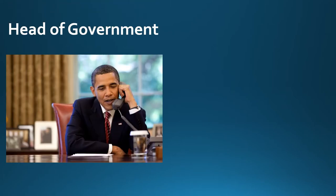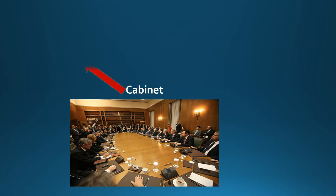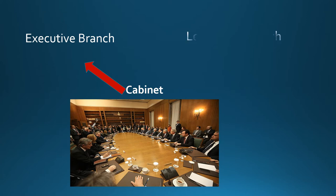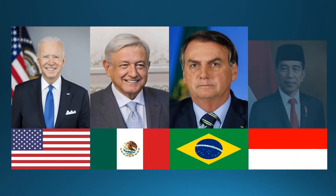Under a presidential system, the president serves as the country's head of government and its head of state. As head of government, the president leads the country's government and is responsible for enforcing its laws through the cabinet and executive agencies. As head of state, the president is a ceremonial representative of their country to the world. The cabinet is under the authority of the executive branch, meaning members are appointed and dismissed by the president, and the legislature cannot dismiss them without impeachment. Examples of presidential republics are the United States, Mexico, Brazil, and Indonesia.